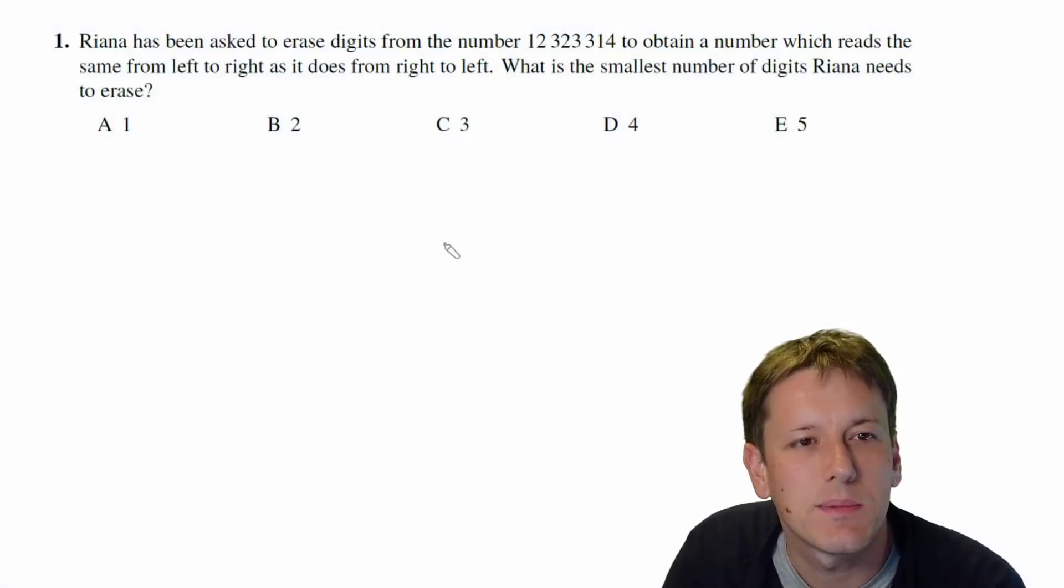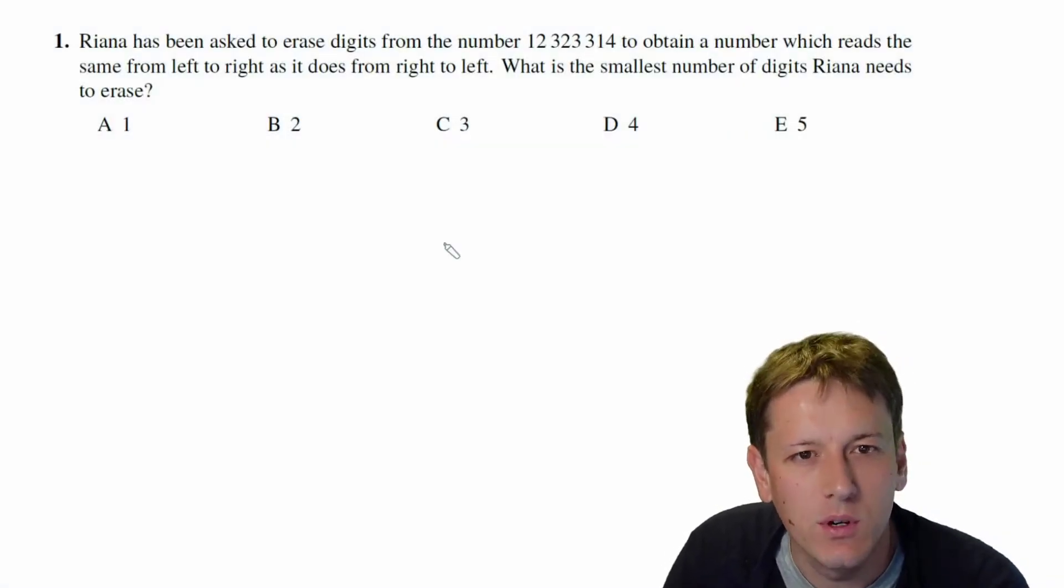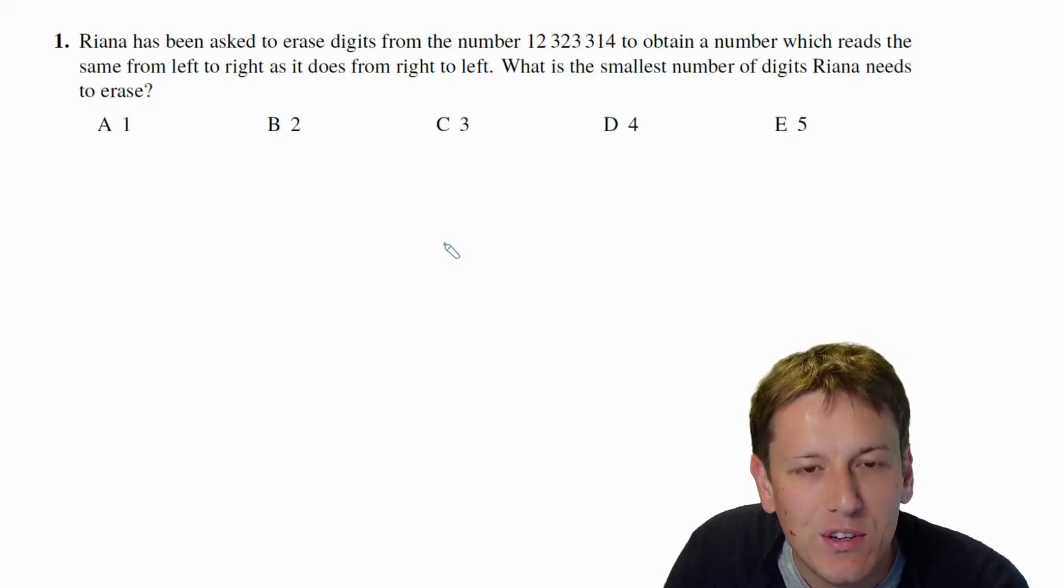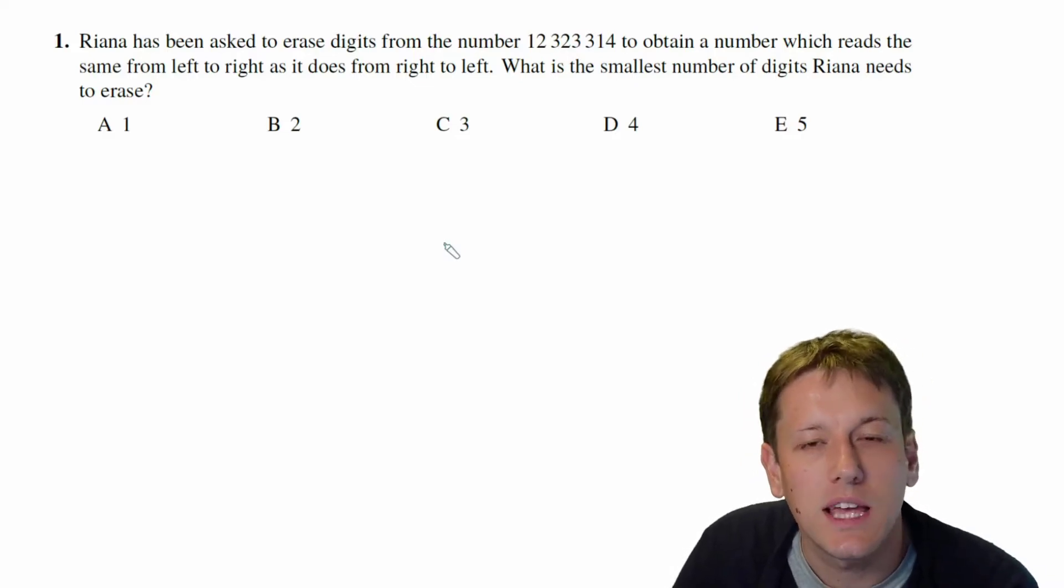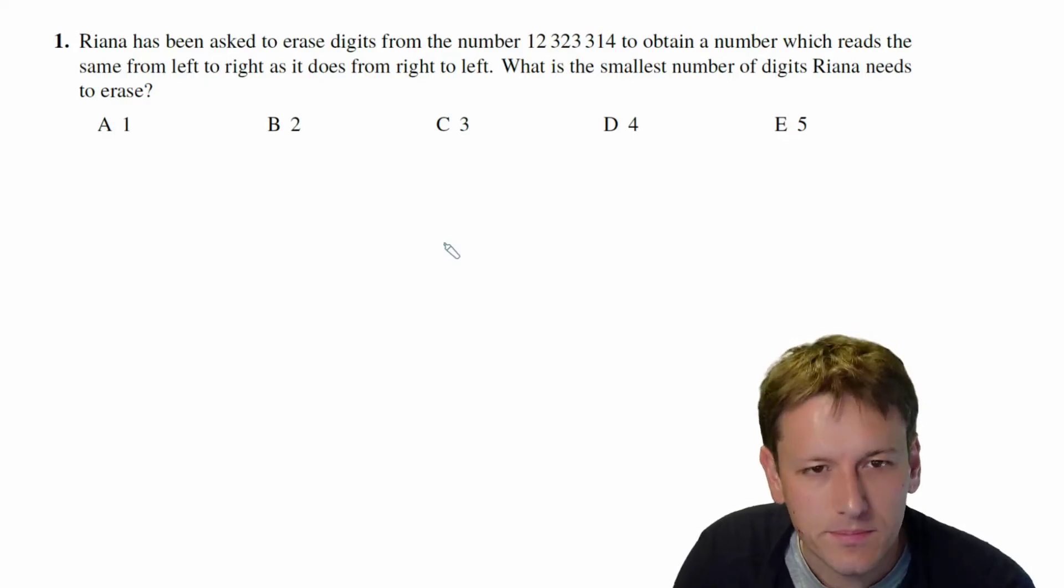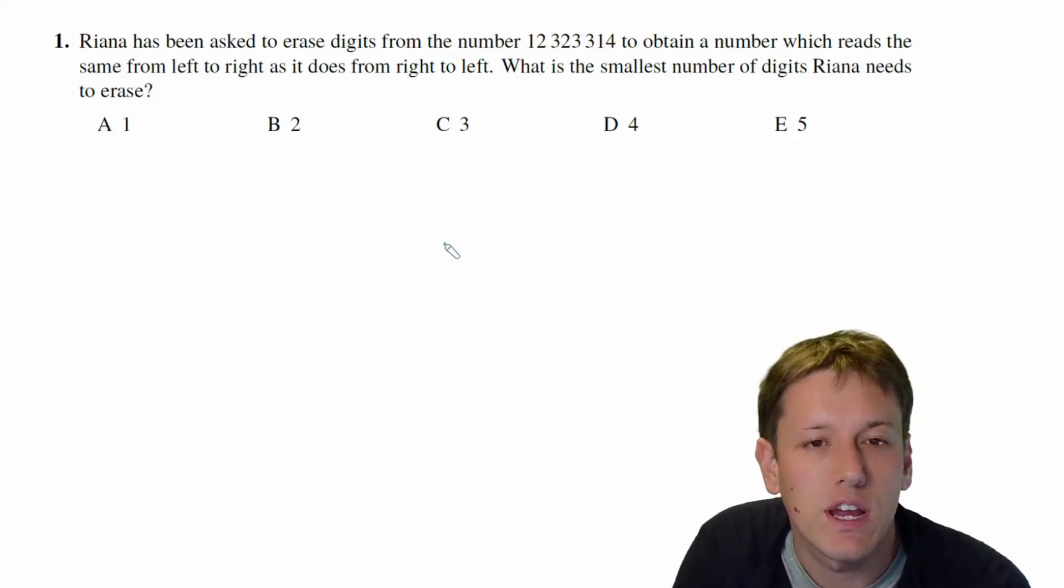In question one, Rihanna has been asked to erase digits from the number 12323314 to obtain a number which reads the same from left to right as it does from right to left. Those sorts of numbers or words that have the same property are often called palindromes, something that reads the same forwards as it does backwards, and it says what is the smallest number of digits that Rihanna needs to erase?